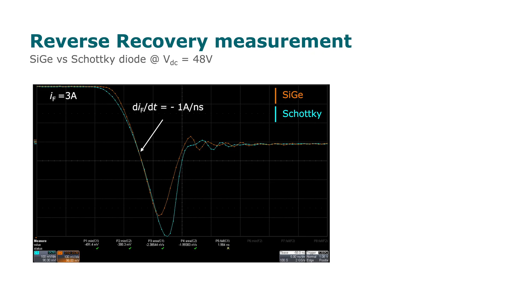And now let's have a look at the results. Both diodes switch with the same dI/dt. The SiGe diode shows a lower recovery charge and lower reverse recovery current compared to the Schottky diode. The snappiness is also lower.